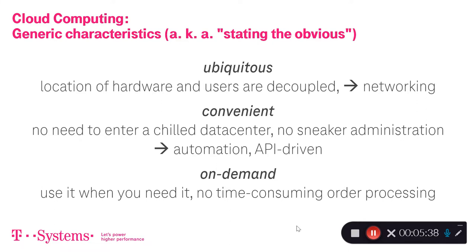Ubiquitous computing means that the location of the actual hardware and the users are decoupled. Usually they are connected over a network. Cloud computing servers are typically located in a huge data center, whereas the users can be anywhere in the world — they just need some kind of network access. Convenient especially for the user means it's not necessary to enter a cooled-down data center.